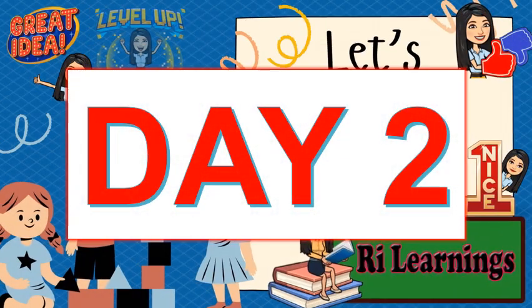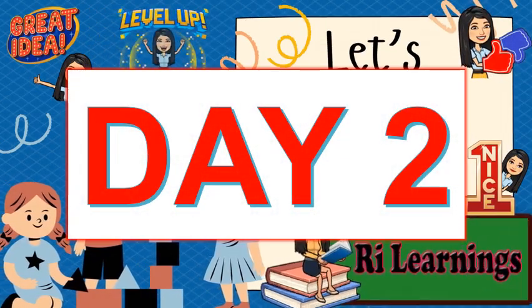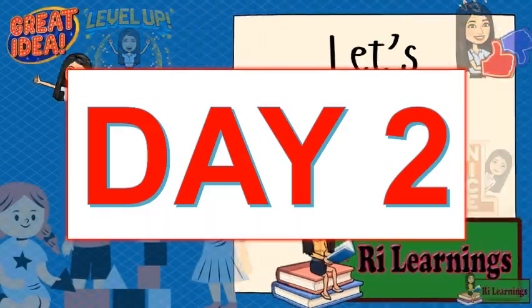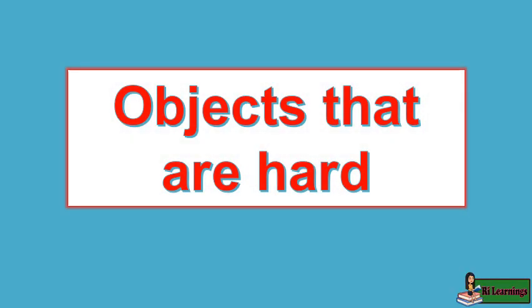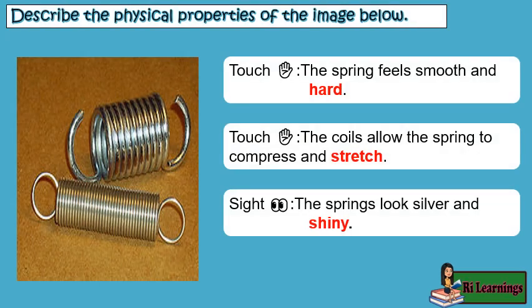Day 2 — Objects that are hard. Describe the physical properties of the image below. Touch: the spring feels smooth and hard. The coils allow the spring to compress and stretch. Sight: the springs look silver and shiny.